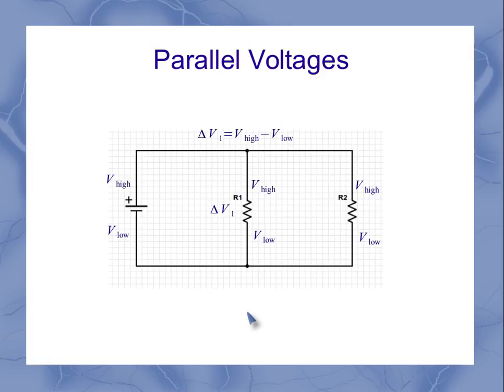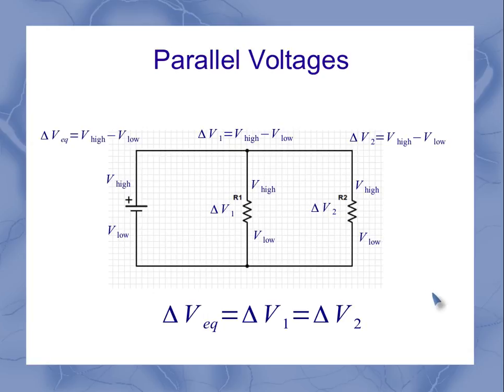That means my voltage across resistor one, which is the potential difference between the high potential and the low potential. Similarly, my voltage on resistor two is going to be the difference between my high and low potentials, same thing for my equivalent. That means for parallel, I've got the same voltage for my equivalent voltage, my voltage on one and two in terms of my two resistors.